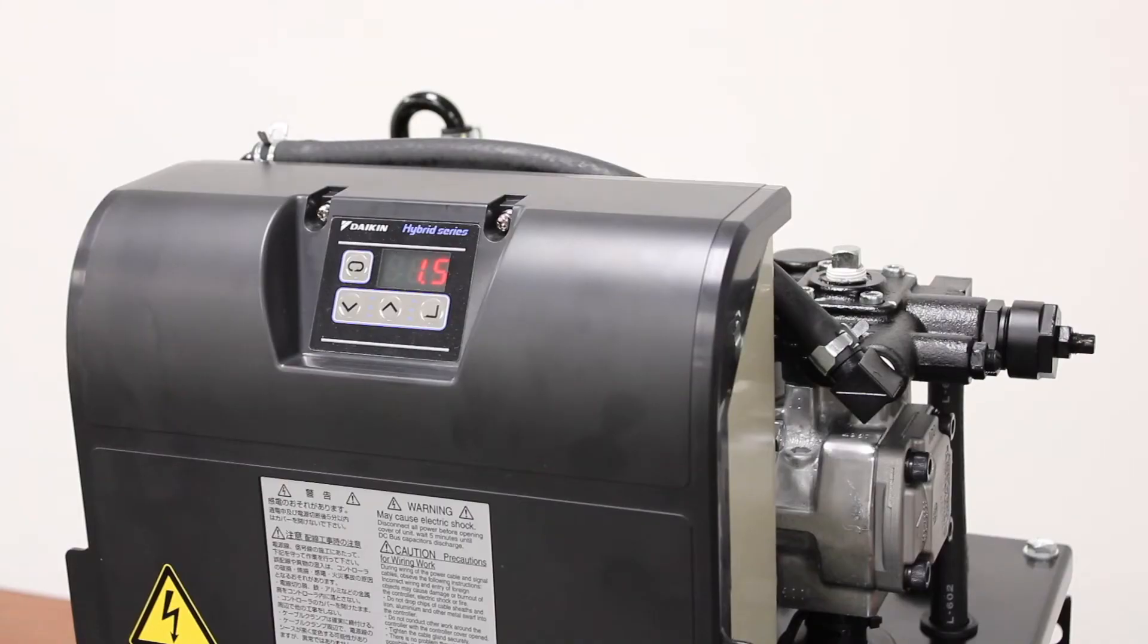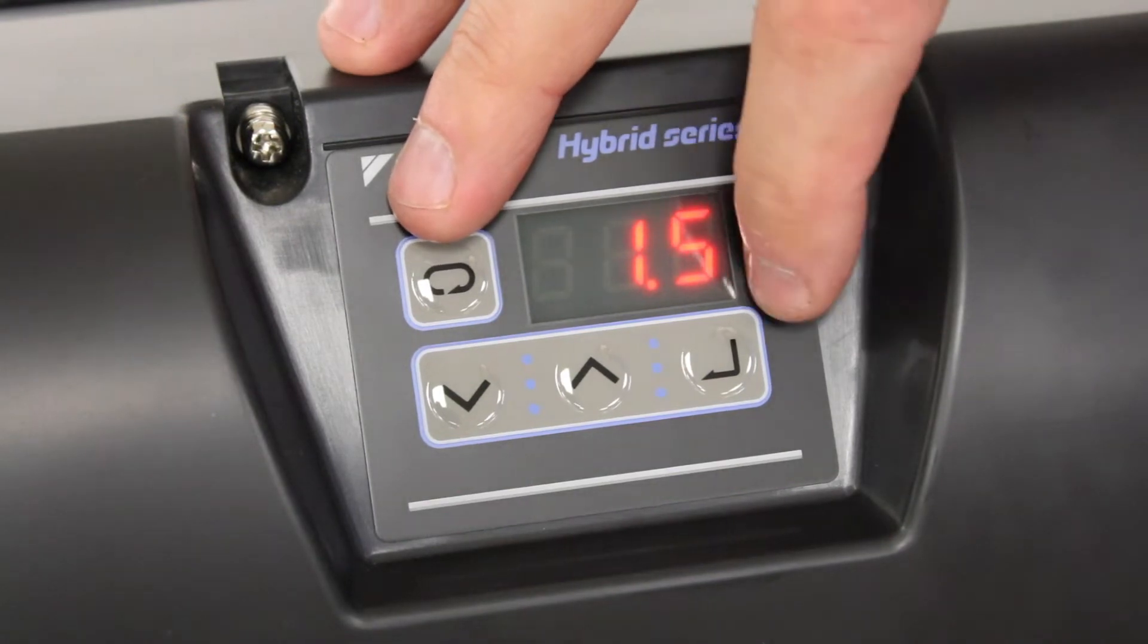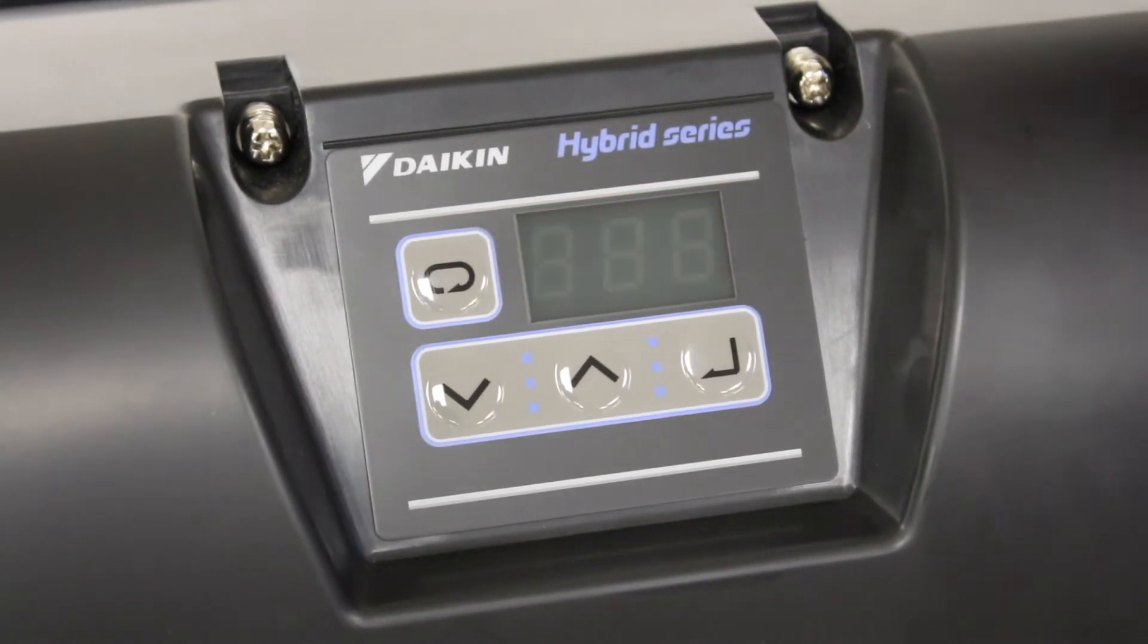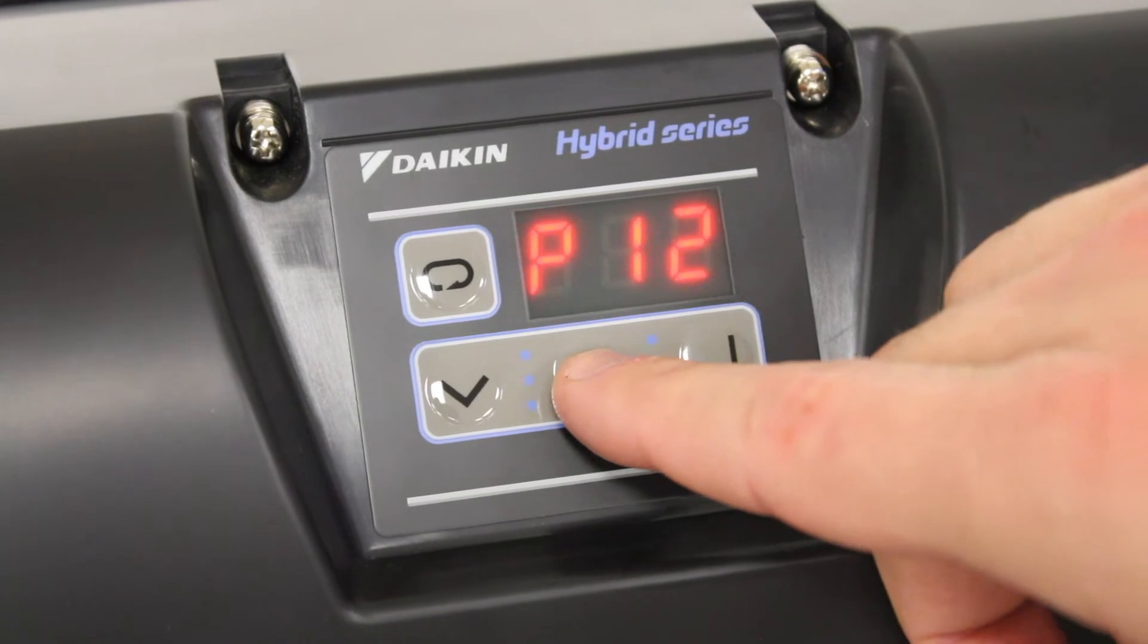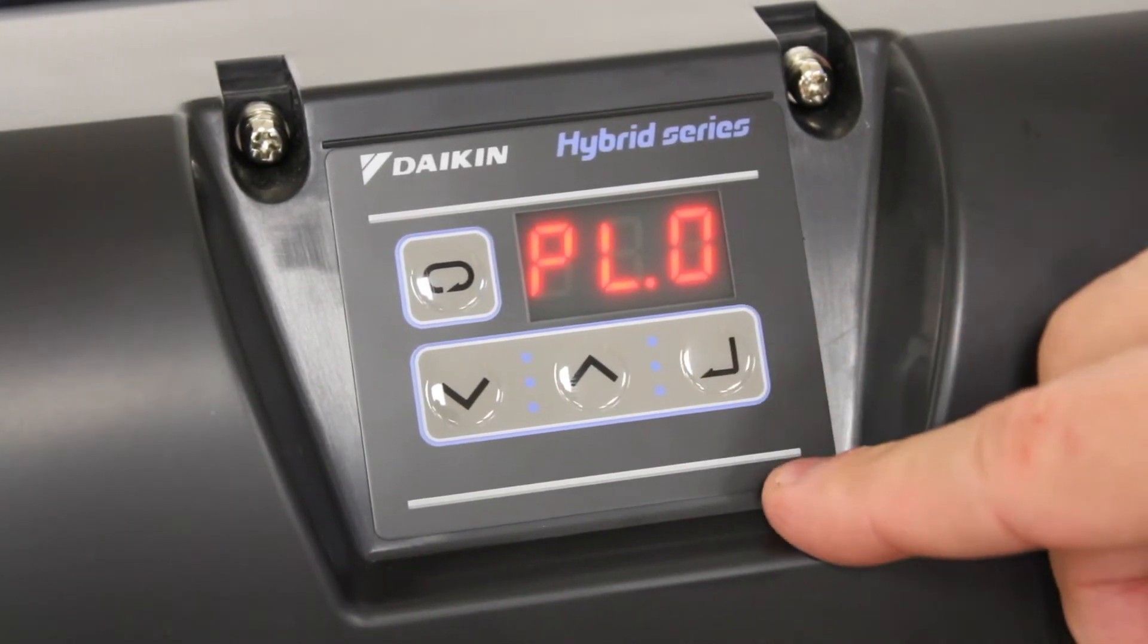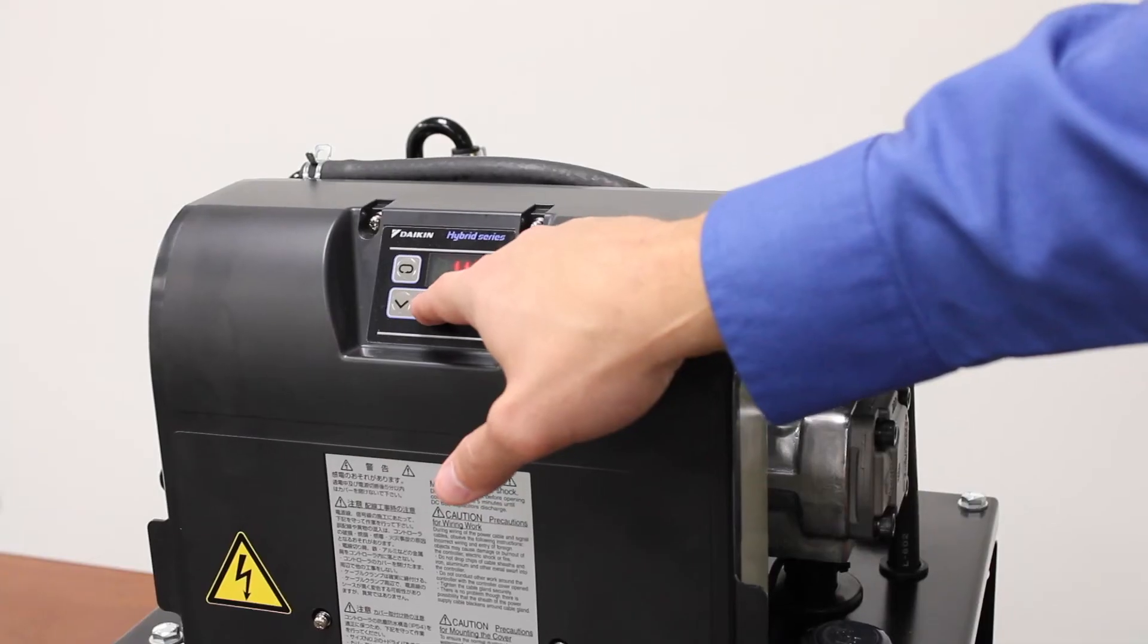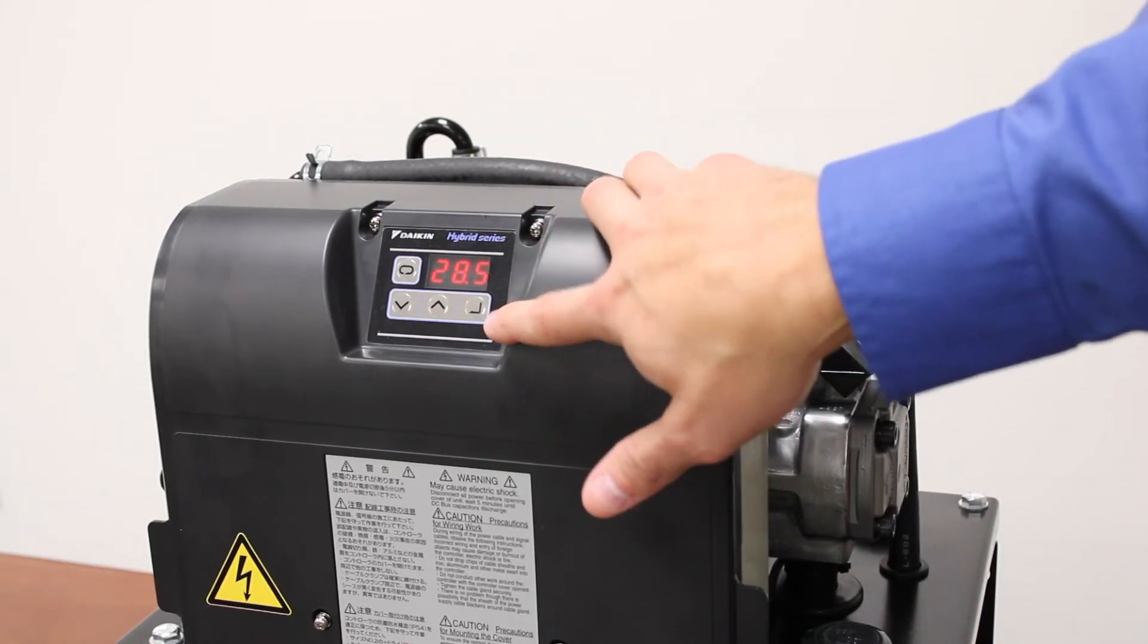To set system pressure, we need to get into parameter mode on the keypad. To get to parameter mode, we're going to hold down the menu and the return key simultaneously for three seconds until it flashes P00 on our display. From there, we use the up arrow to scroll up to parameter P13 and hit enter. You'll see the readout PL0 and our current pressure setting which is 1.5. You can adjust that by using your up and down arrows. Once you've reached your set point, hit enter to save it.